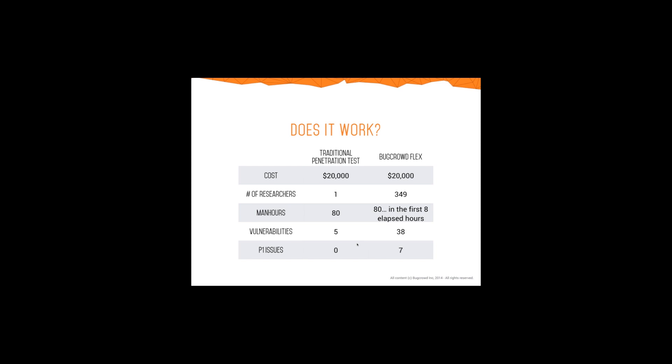When you compare the efficacy of a group of people incentivized based on results versus one or two people incentivized based on effort, it makes sense logically that you get a better result from the larger group. Here's an example from a bake-off we did against a $20,000 traditional penetration test. We had 349 participants. For the traditional pen test, $20K gets you about 80 hours of work — we saw 80 hours of effort put into the program within the first eight elapsed hours. So one of the other benefits of these programs is they're also very fast.